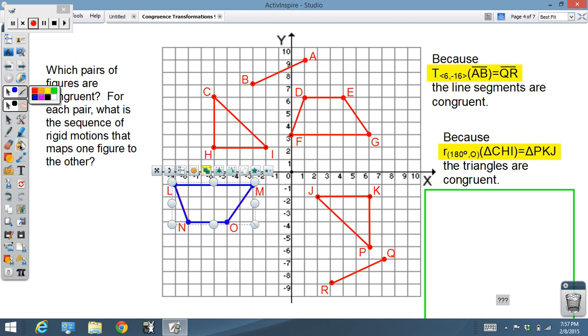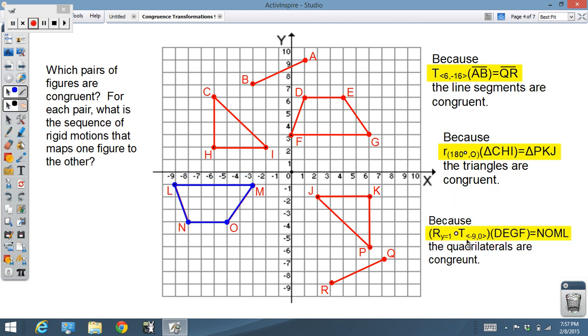So, basically, what we know then is that we did this composition, the translation of left nine, up and down zero, and then a reflection over the line y equals one on DEFG, and it became NOML, then the quadrilaterals must be congruent. So, we proved those figures congruent by using a series or a single isometry or a series of isometries, a composition, to prove that the two figures would be congruent in each case.